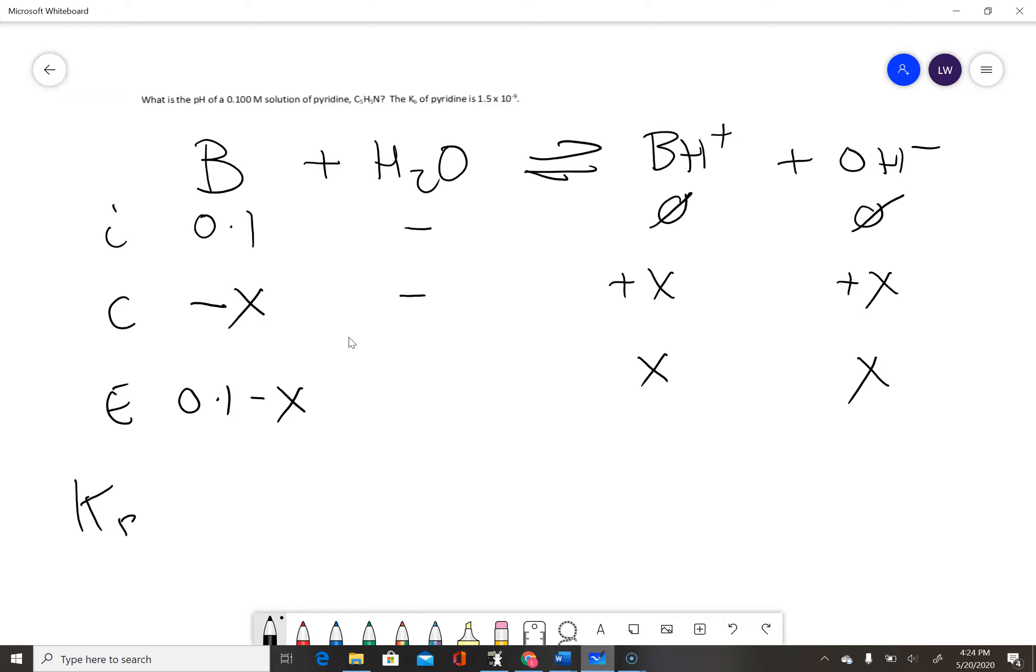So Kb, products over reactants, is x times x over 0.1 minus x, and that equals 1.5 times 10 to the minus 9.